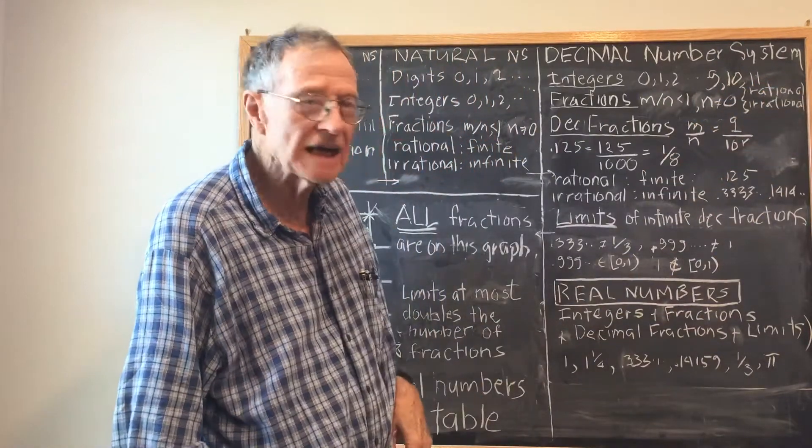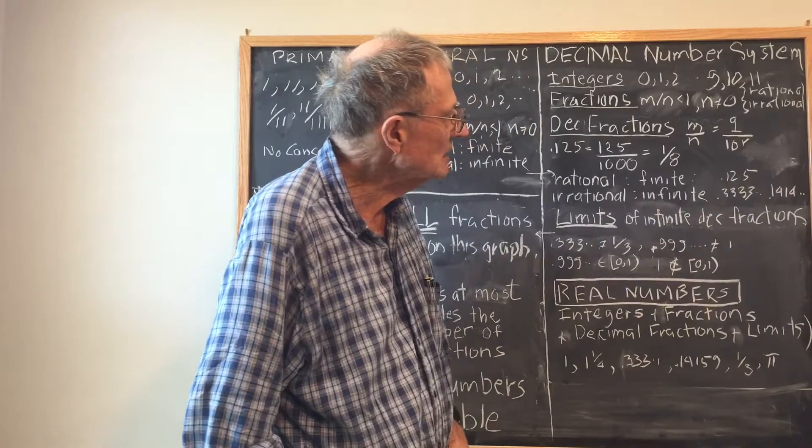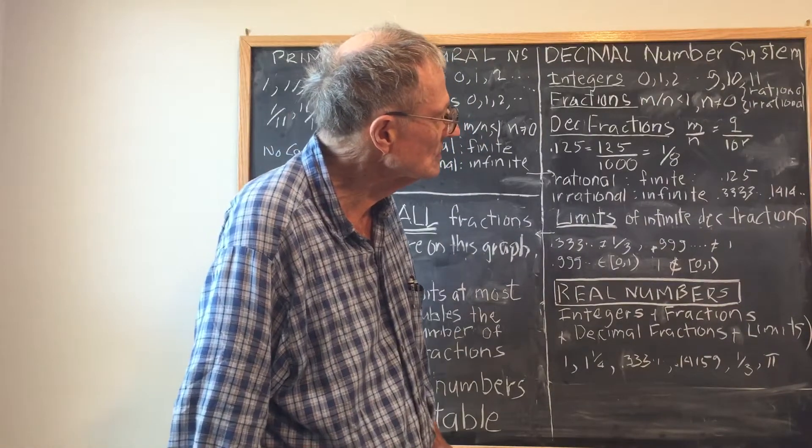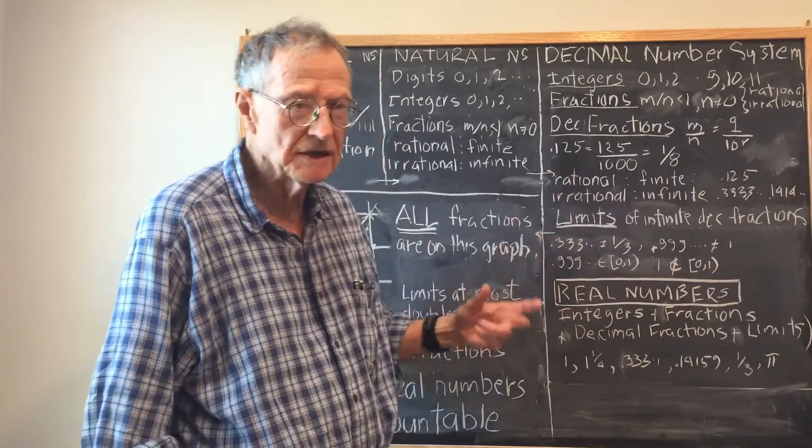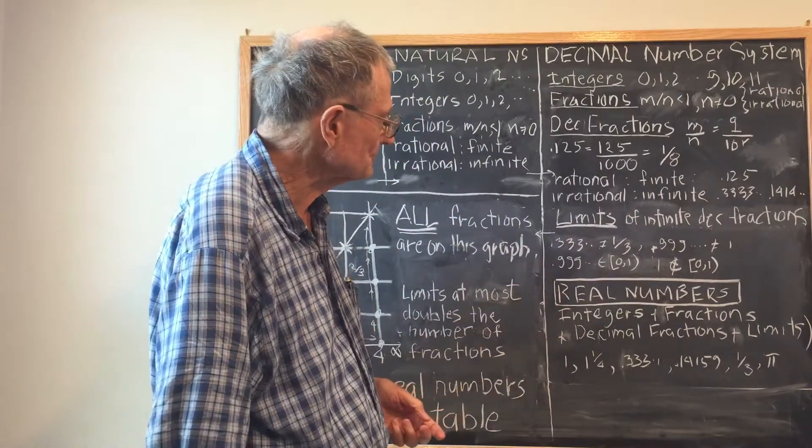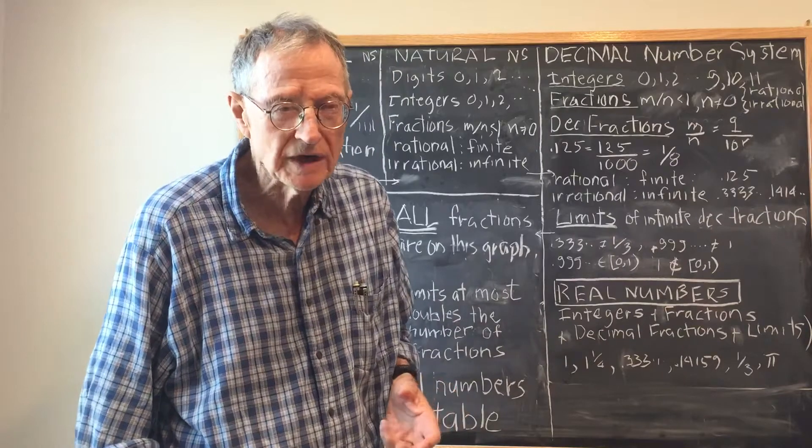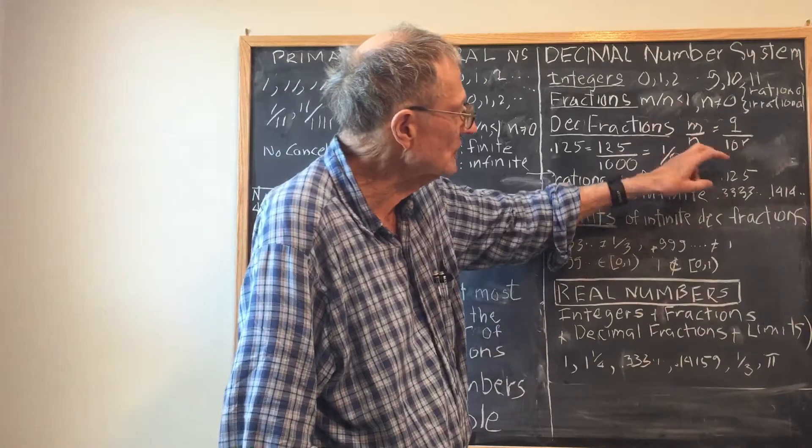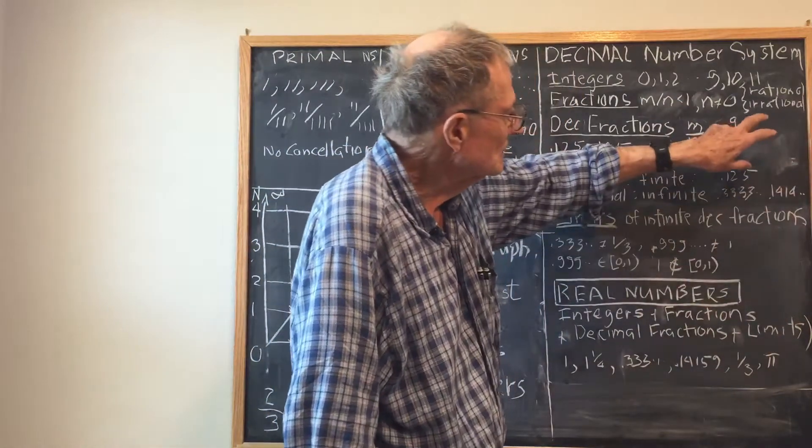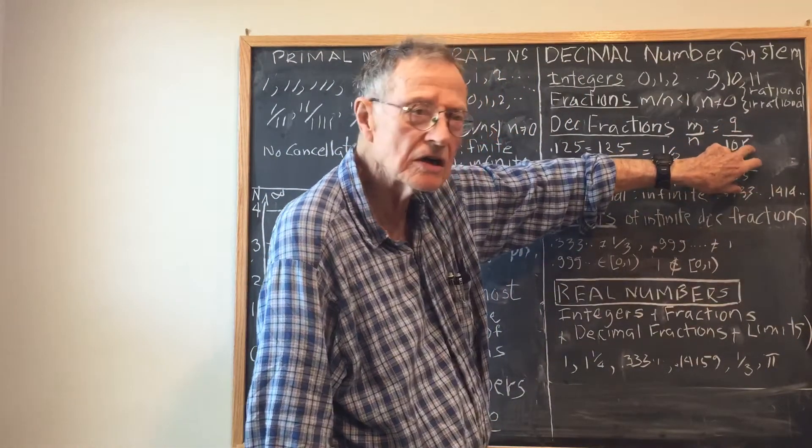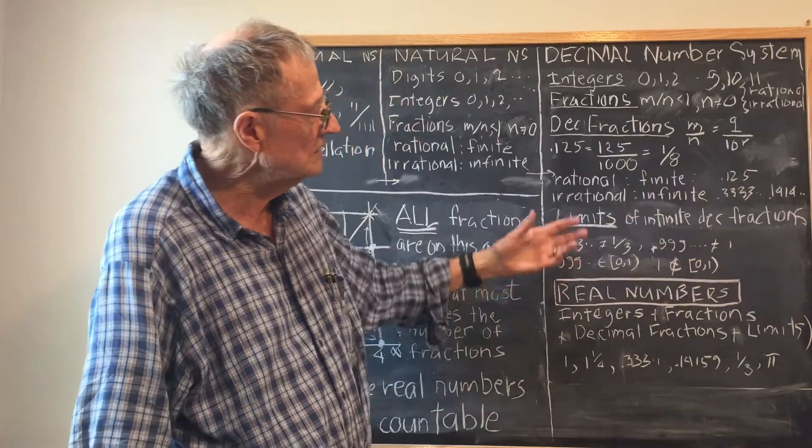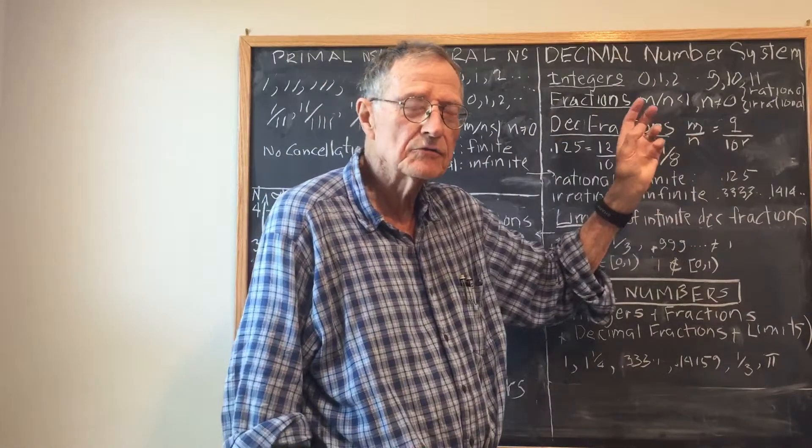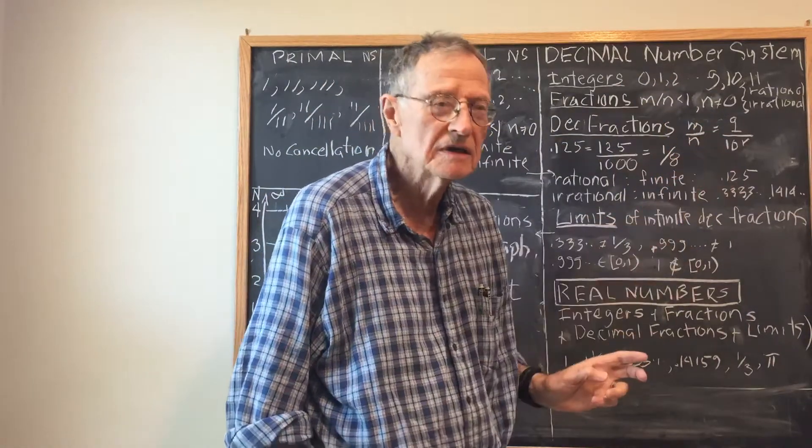We also have fractions m over n less than 1, n unequal to 0, and those fractions are also rational or irrational, depending on whether the numerator and denominator are finite or infinite. Then we have a new quantity called the decimal fraction, which is defined by m over n equals some integer over 10 to the r. So you're essentially expressing all fractions as a ratio of some number to a power of 10.